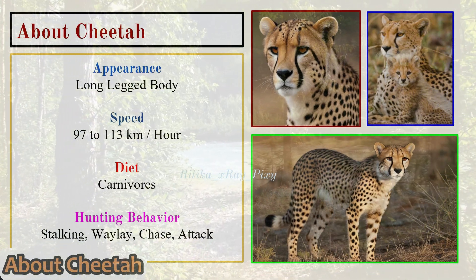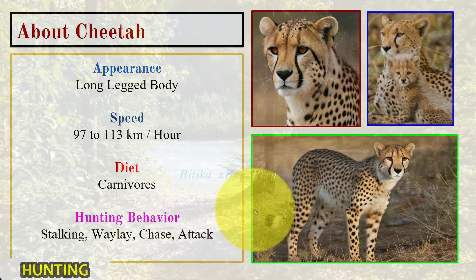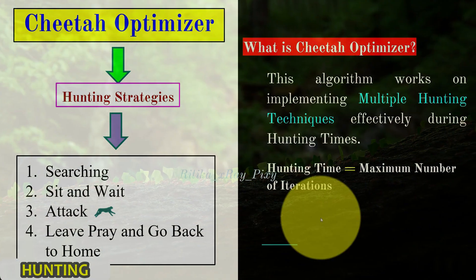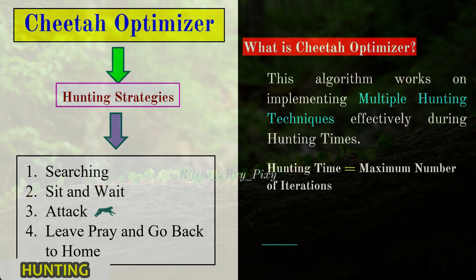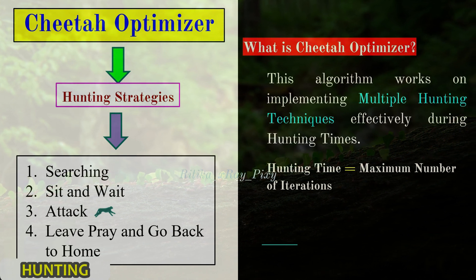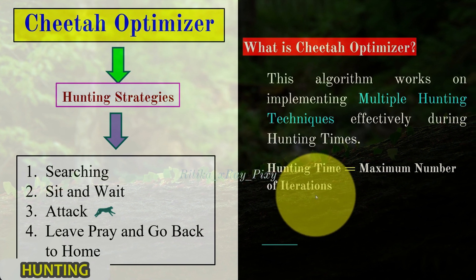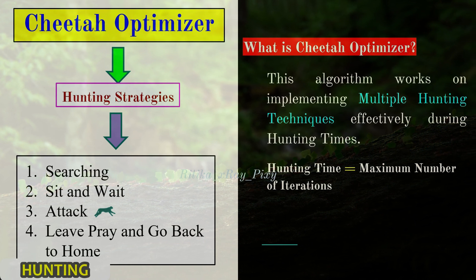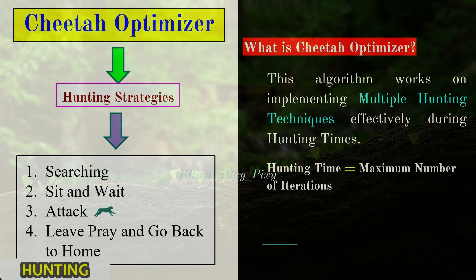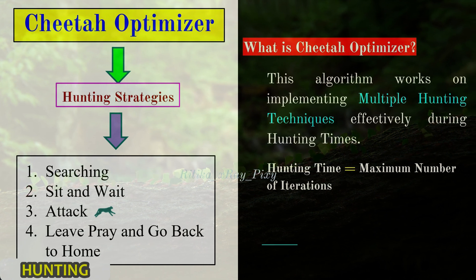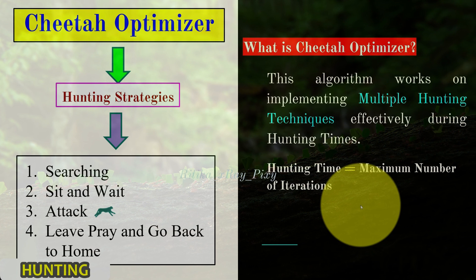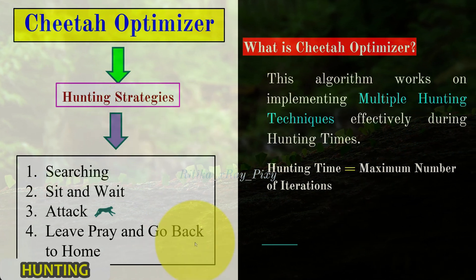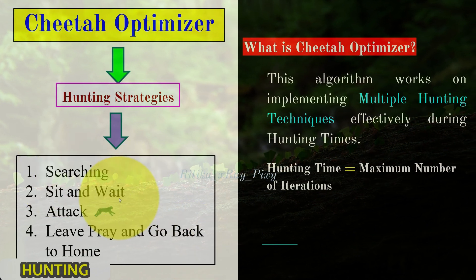Cheetahs use different hunting techniques: they stalk the target, sit and wait, chase, and attack. In this algorithm, multiple hunting strategies are implemented. In the virtual environment we have virtual cheetahs and a virtual target. The hunting time corresponds to the maximum number of iterations. The four hunting strategies are: searching, sit and wait, attack, and leave the prey and go back home.